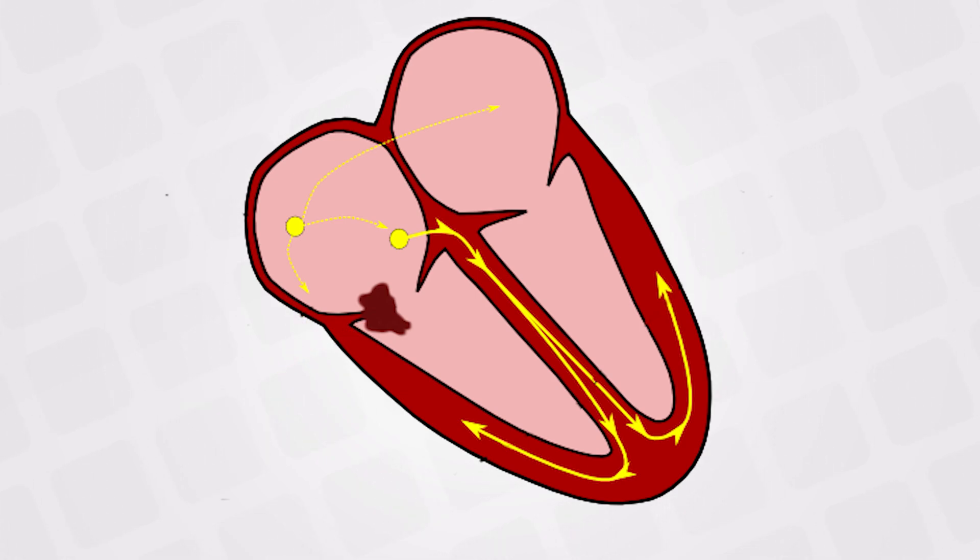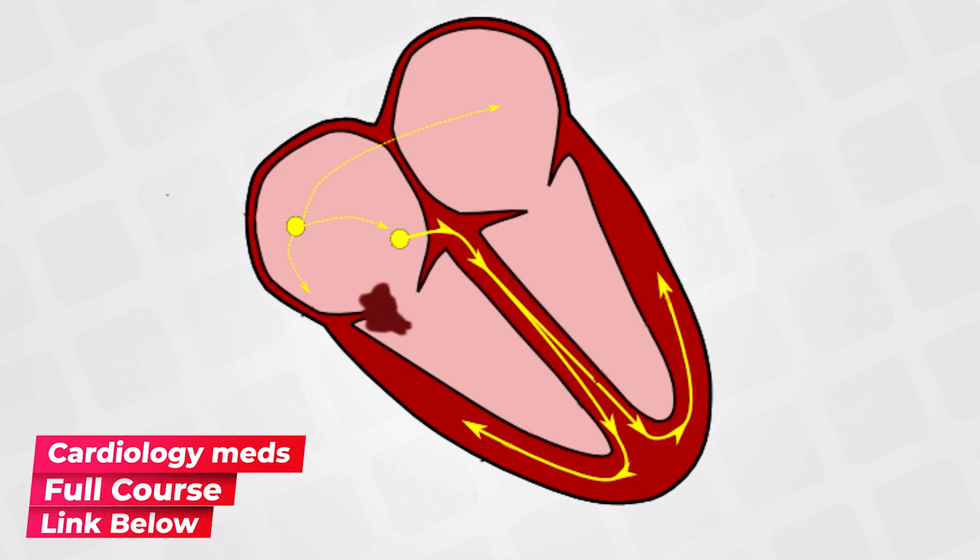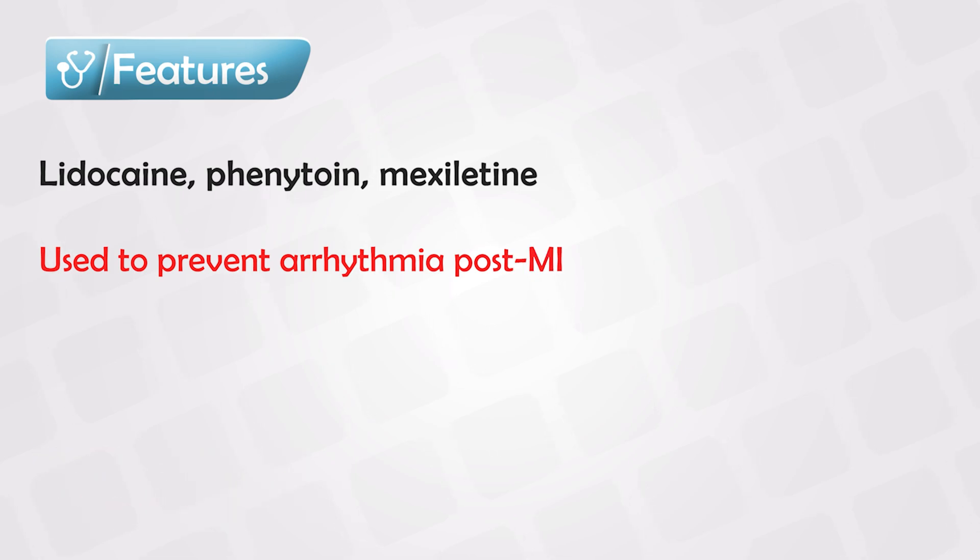The class 1B medications simply allow the current to go through dead cells or semi-dead cells, which is why we use this medication in patients who had recent MIs. Patients who have myocardial infarction are prone to developing arrhythmias after the episode, and we use class 1B to prevent that.